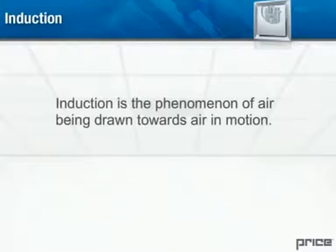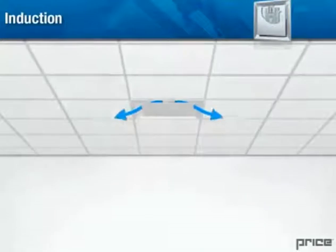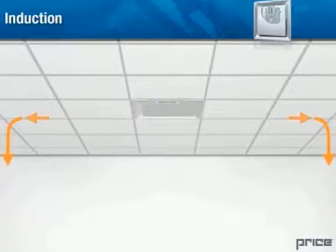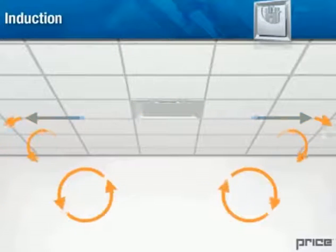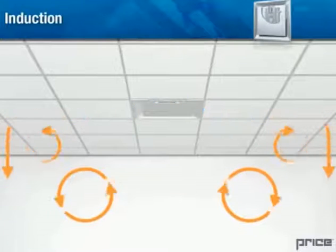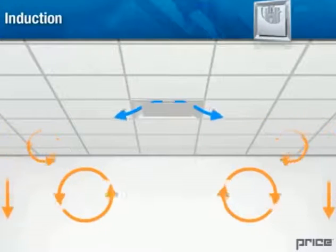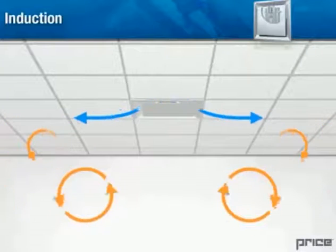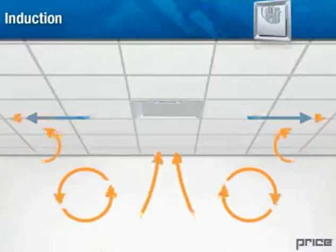Induction: Induction is the phenomenon of air being drawn towards air in motion. As the speed of air movement increases, the static pressure in the zone decreases, pulling the surrounding air towards it. Induction is important to the performance of mixing systems. It's the high velocity discharge that draws in room air and mixes it with the supply air. A high performance mixing diffuser will have, among other characteristics, a high discharge velocity. The Price VAV diffusers use this principle to monitor the room temperature from the diffuser plaque. As conditioned air is discharged from the diffuser at high velocities, air within the room is drawn up to the plaque where the integral thermostat can accurately measure the temperature of the room.